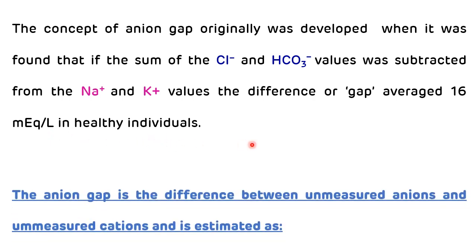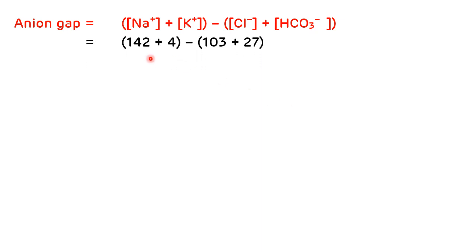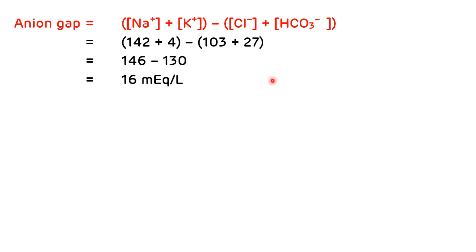The anion gap is the difference between unmeasured anions and unmeasured cations, estimated as the value of unmeasured anions subtracted from unmeasured cations. For example, if sodium is 142, potassium is 4, chloride is 103, and bicarbonate is 27, we get a value of 16 mEq/L. This is how you can derive the anion gap value.